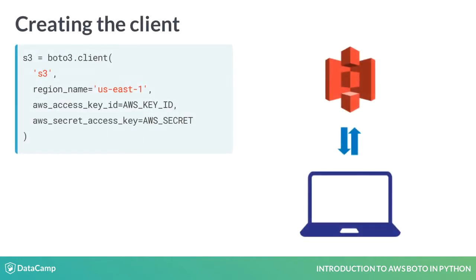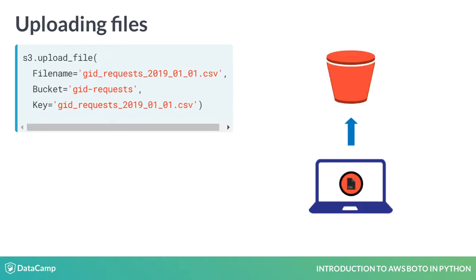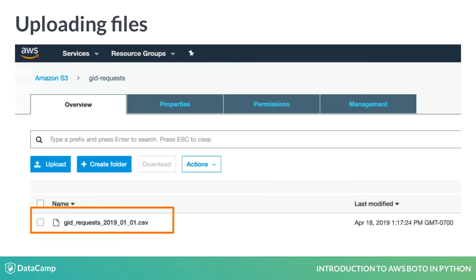First, we create the client and assign it to the S3 variable. Now we can perform operations on our objects and buckets. Let's upload an object into a bucket. We upload the file using the client's uploadFile method. The file name is the local file path. The bucket parameter takes the name of the bucket we are uploading to. Key is what we want to name the object in S3. We are not capturing the return from this method in a variable — the method doesn't return anything. If there's an error, it will throw an exception. Our file is now in S3.